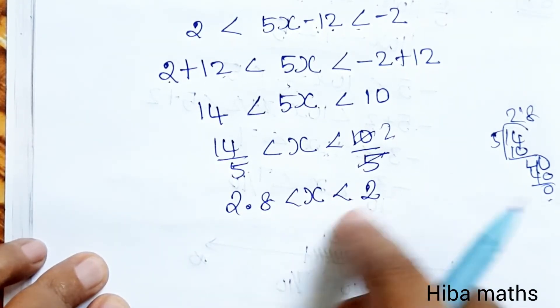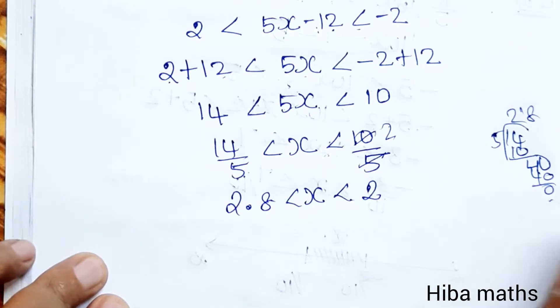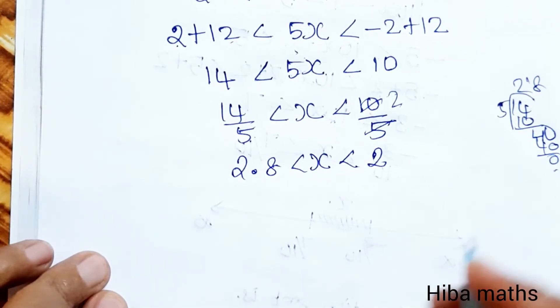2.8 is greater than 2, so there are no values that satisfy this. This is not possible, which is not possible, hence it has no solution.